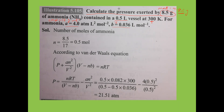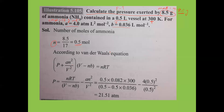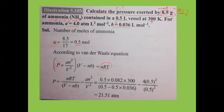Rearranging Van der Waals equation to solve for P: P = nRT/(V − nB) − an²/V². Here an²/V² is the pressure correction and nB is the volume correction. Substituting all values — n=0.5, R=0.0821, T=300 K, V=0.5 L, a=4, b=0.036 — we get pressure = 21.5 atm.